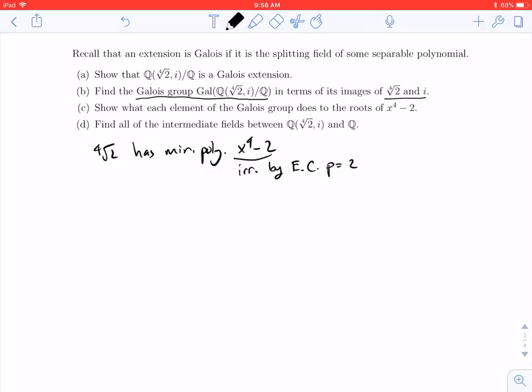So we know that any Galois automorphism is going to permute the fourth root of 2 amongst the roots of its minimal polynomial. And the roots we showed in the last video are plus or minus the fourth root of 2 and plus or minus i times the fourth root of 2. And you also have i, and i has minimal polynomial x squared plus 1, and the roots of this polynomial are plus or minus i.